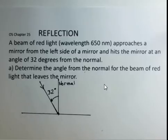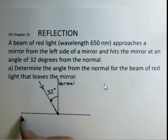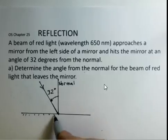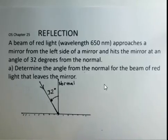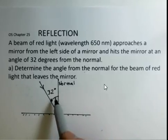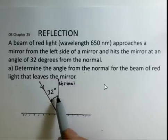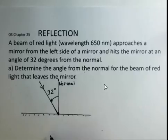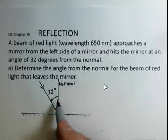It's coming towards a mirror. A mirror is the horizontal line here. And this ray is coming in such that it's 32 degrees away from the normal. The normal is perpendicular to the mirror.